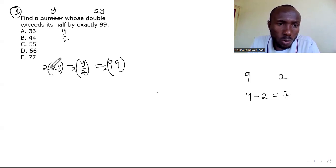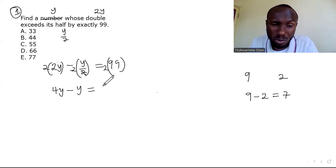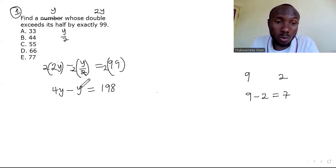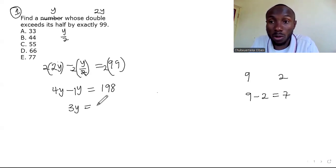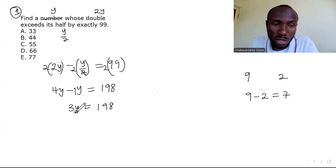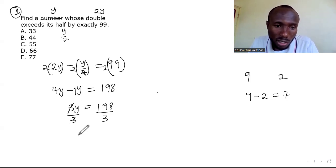Multiplying through by 2 gives 4y minus y equals 198. That simplifies to 3y equals 198. Dividing both sides by 3 gives y equals 66. First answer done — the number is 66.